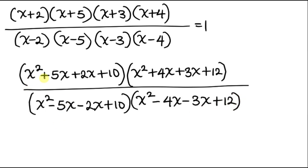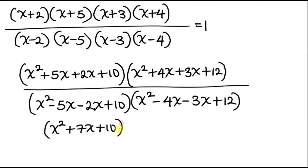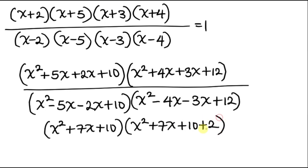Our next step is to simplify inside the brackets. We have x² + 5x + 2x + 10 = x² + 7x + 10. And in the other bracket: x² + 4x + 3x + 12. Now 12 is the same as 10 + 2, so we can write x² + 7x + 10 + 2. I did this because I want this expression, x² + 7x + 10, to appear in both brackets.